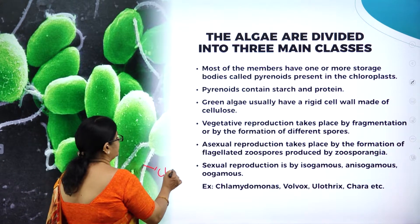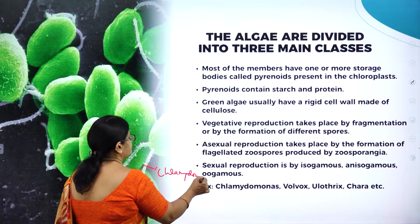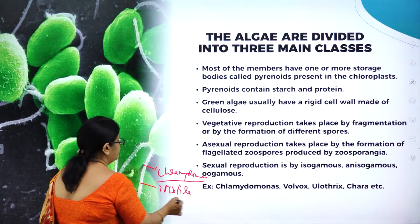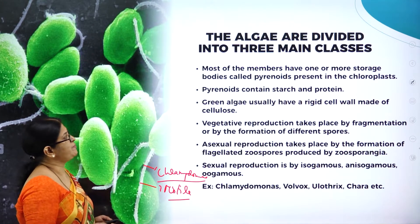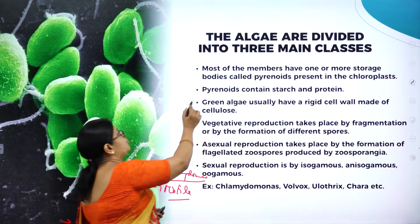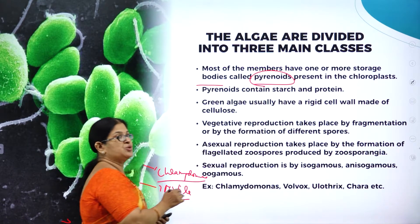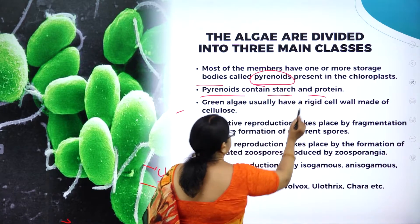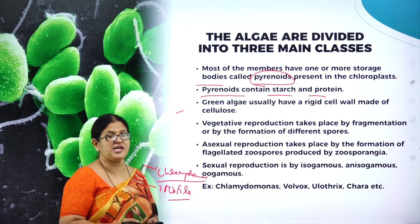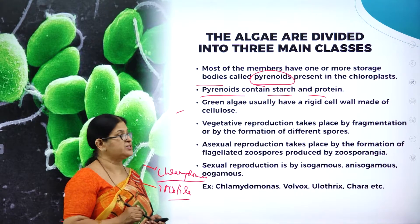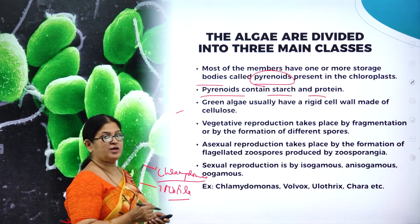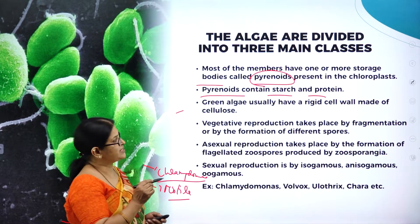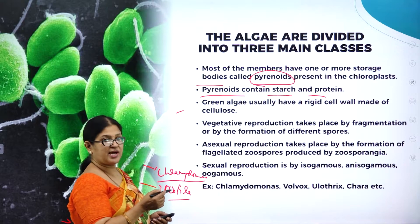Here you can see a picture of motile Chlamydomonas. Most of the members have one or more storage bodies called pyrenoids present in the chloroplast. Pyrenoids contain starch and protein. This is a question which is usually asked in the exam — what are pyrenoids and what do they contain? They contain starch and protein.